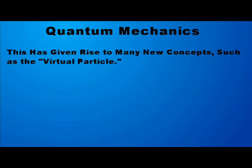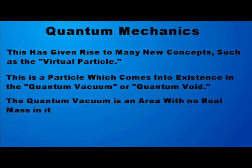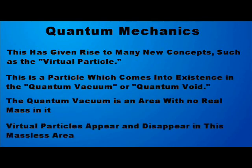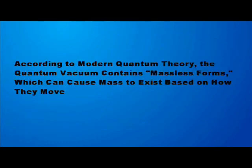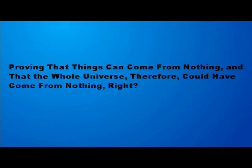Among the numerous concepts created through quantum mechanics is the virtual particle, a particle which comes into existence in the quantum vacuum, an area in which there are no physical particles with any real mass. In this area, virtual particles appear and disappear. Modern quantum theory describes the vacuum as containing massless forms which form mass when they move in a certain way and configuration. Now, because mass can come into existence and cease to exist in virtual particles, this proves that things can come from nothing, and therefore the whole universe could have come from nothing, right?